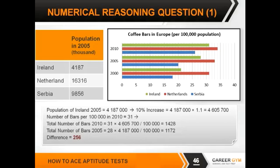Subtract one from the other and you get a difference of 256. We've made it slightly tougher by not giving you the multiple choice options — in reality you will have them, and they're designed to throw you. For example, some answers will be based on the population growing by 1% in case you get your scale wrong, or even 100%. So remember, you'll get multiple choice options to choose from.